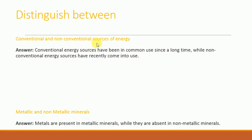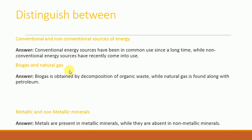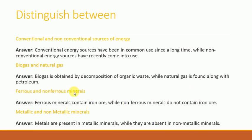Conventional and non-conventional sources of energy: conventional sources have been in common use since a long time, while non-conventional energy sources have recently come into use. Biogas and natural gas: biogas is obtained by decomposition of organic waste while natural gas is found along with petroleum. Ferrous and non-ferrous minerals: ferrous minerals contain iron while non-ferrous minerals do not contain iron.